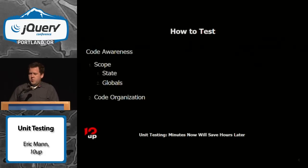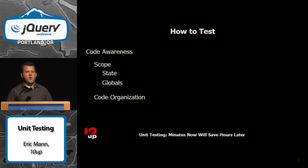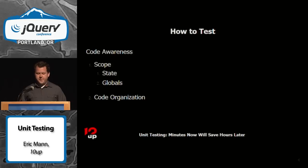How to test is basically a question of code awareness — how much do you understand your own code? There are certain best practices we need to follow when writing code: how we scope our variables, how we structure our classes and objects, how we amend the object prototype. Different ways we put our code together will impact how we actually test it.